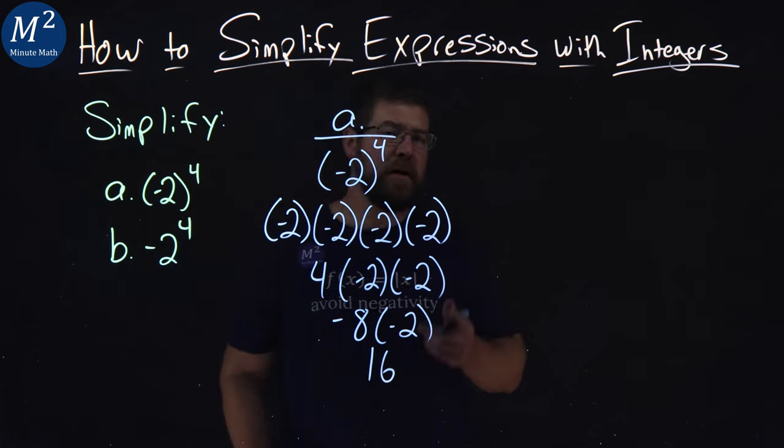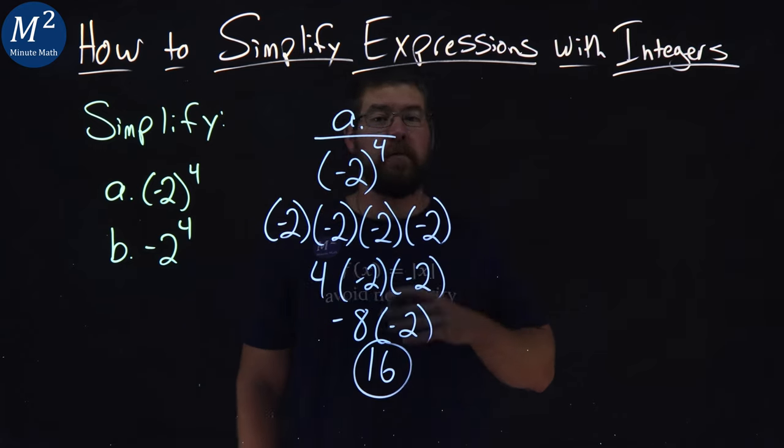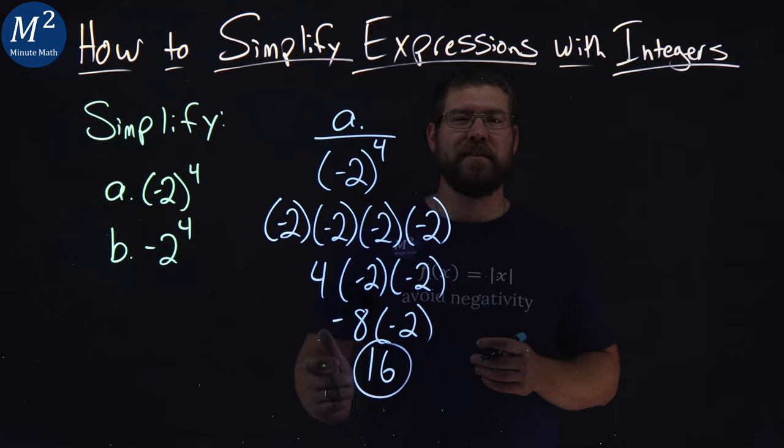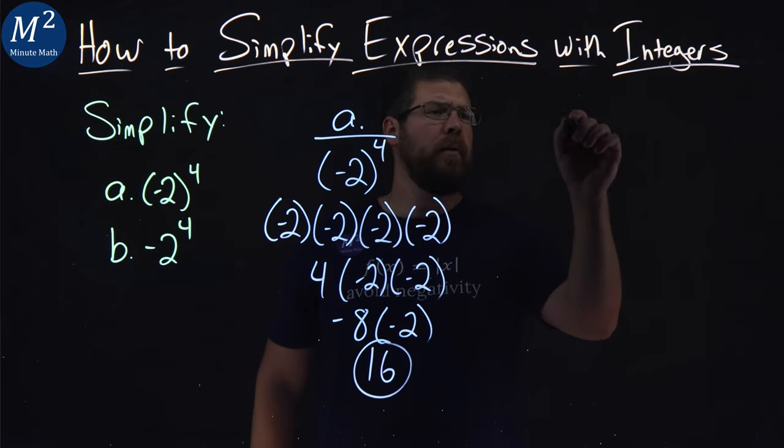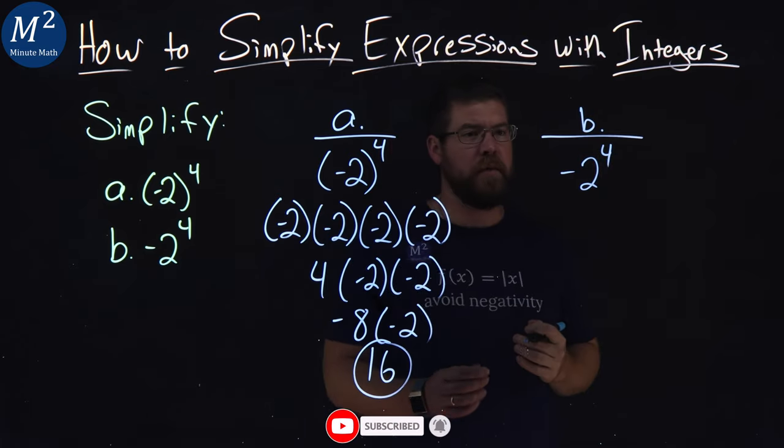Negative eight times a negative two is a positive 16. Remember, two negatives multiplied make it a positive. So negative two in parentheses to the fourth power comes out to be a positive 16. What about part b?